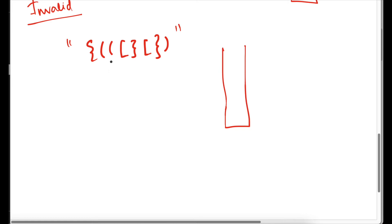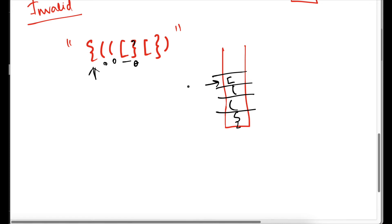Now we are going to do a dry run of the invalid parenthesis. We push the first character, then the second, then the third opening brace, then a square brace. Now we have encountered a closing curly brace. Stack size is not zero, but the peek at the top is not matching with its opening counterpart — it's not a match. So here only, since it is not a match, we return false. The moment we encountered something that was not matching the top, we return false. This was the dry run for the invalid parenthesis.